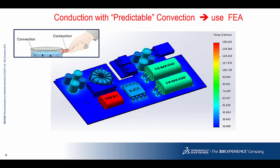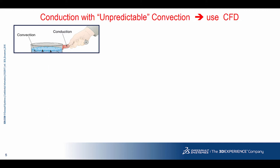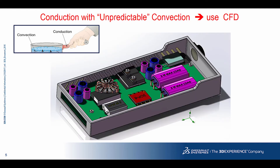If convection is not predictable, or if you want better accuracy by not applying a constant coefficient to all components, then use CFD. Here is the typical scenario of when to use CFD. In this case, we are modeling not only the board, but also the enclosure, the convection source, and the fluid volume within the enclosure. In cases where convection is not predictable, such as forced convection where you don't want to apply a constant coefficient to component surfaces, CFD should be used.